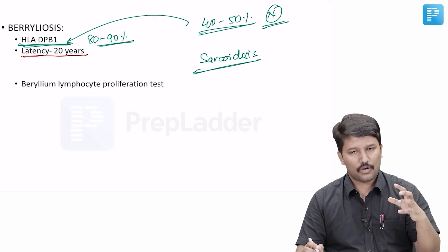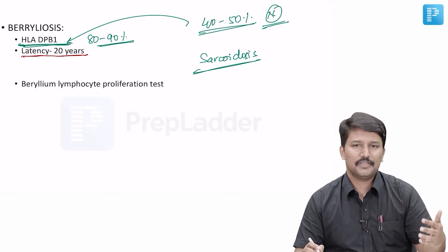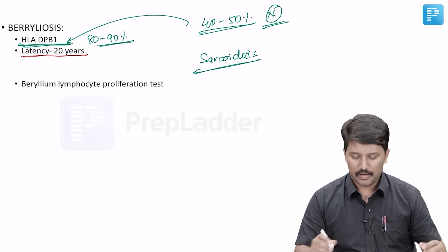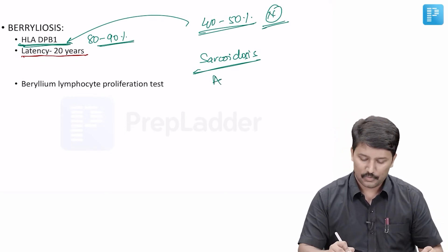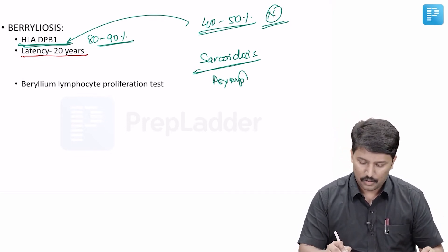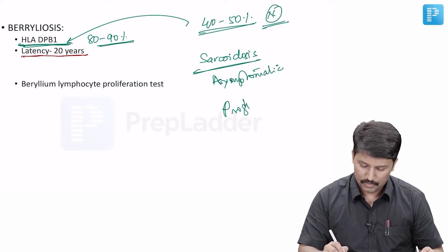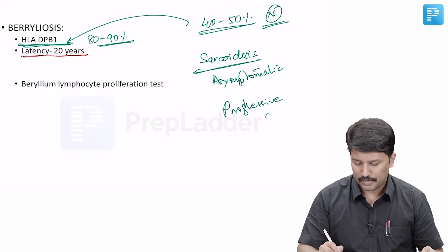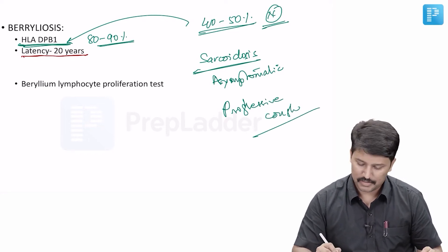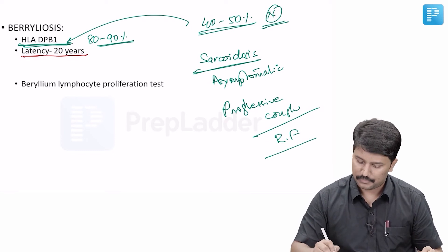On presentation, these patients may be asymptomatic on one end of the spectrum, or they may have progressive cough and other respiratory manifestations suggestive of respiratory failure.